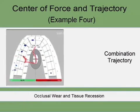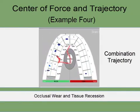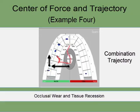The next example shows that the trajectory moves in two separate segments: first horizontally left, indicating group function, and then vertically, indicating the guidance has taken over. Patients with this L-shaped center of force trajectory can be predisposed to hyperactive muscular TMD symptoms, occlusal wear, and recession.